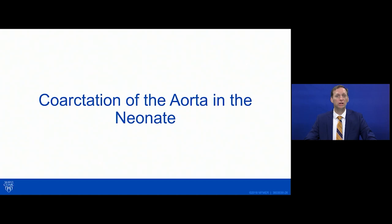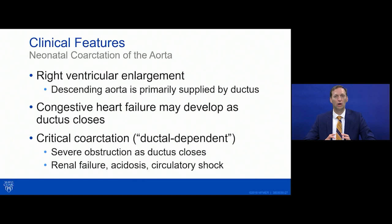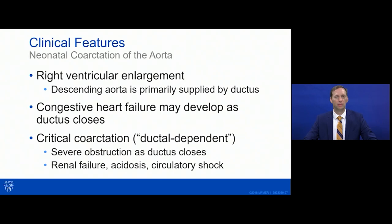In the neonate, we must remember the fetal circulation. In normal fetal circulation, a lot of blood crosses the ductus arteriosus because we don't pump much to the lungs. With coarctation, there's very little LV contribution to descending aorta flow, so the right ventricle becomes dominant, supplying additional blood to the descending aorta. The classic presentation is a seven-day-old where the ductus closes, presenting with congestive heart failure and a large right ventricle with potentially poor function.